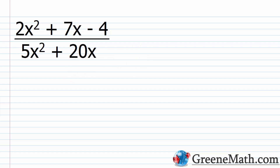We're going to use the same thought process when we simplify rational expressions. If I have something like (2x² + 7x - 4) over (5x² + 20x), all I need to do is factor the numerator and denominator completely and then cancel any common factors. Before we begin, I want to make something absolutely clear: you can only cancel common factors. This is a very common source of confusion.